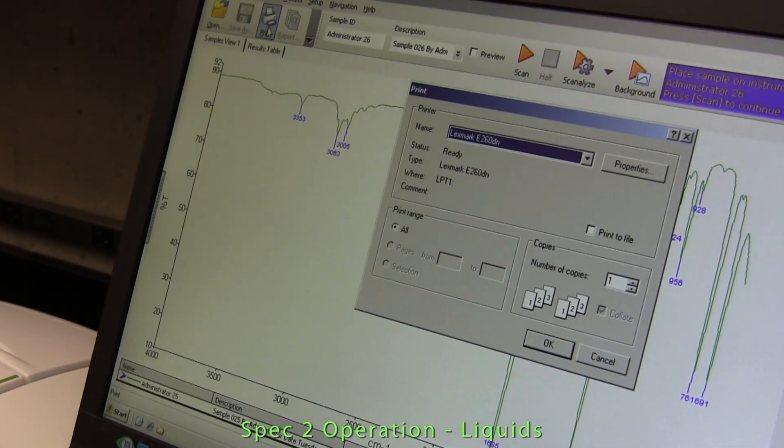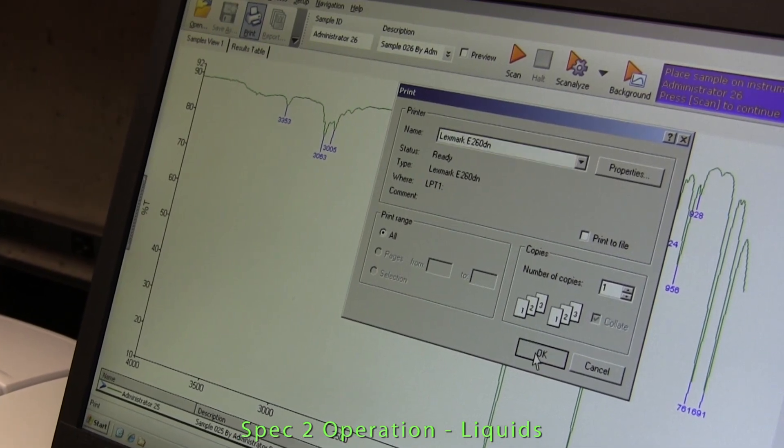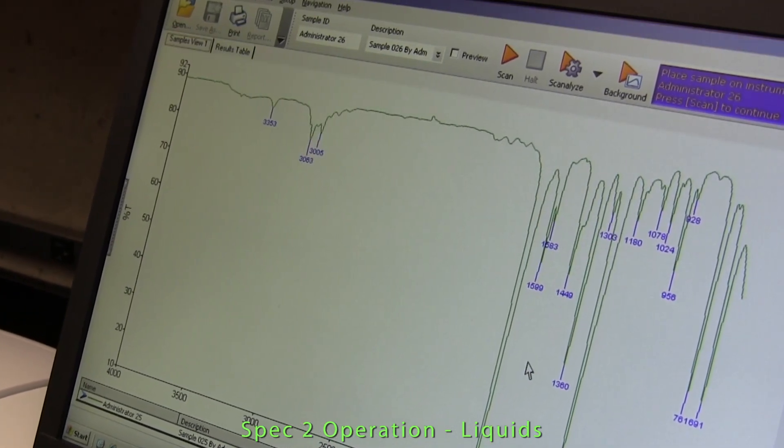Clicking on the labels icon causes the frequency position of the main spectral bands to be shown. And finally, by selecting the print icon, the spectrum is sent to the printer so that we can obtain a hard copy.